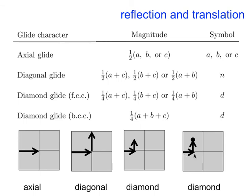Diamond glide is a quarter of those two translations — quarter a and quarter c. There is a special case for body-centered cubic structures where there are three translations: a quarter along one direction, a quarter along another, and a quarter out of the plane of the board. The terminology is: for axial glide we use a, b, or c; for diagonal glide we use n; and for diamond glide we use the symbol d.